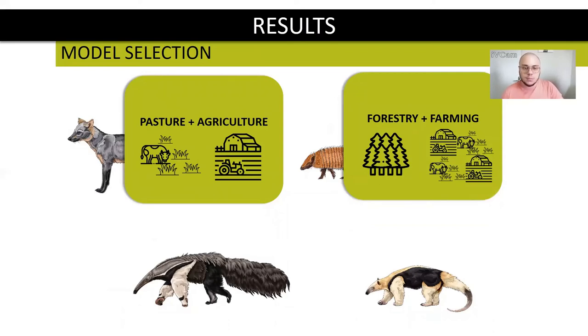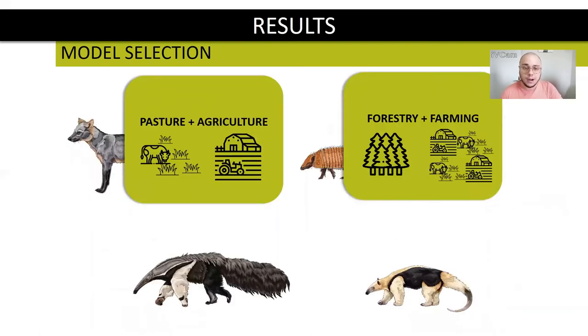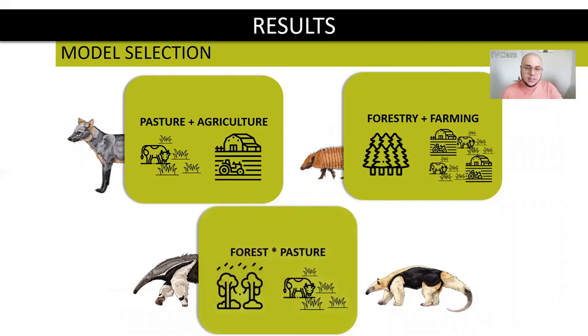Forestry, that is the commercial plantation of pinus and eucalyptus, summed with farming, with forestry having a stronger effect than farming. For Myrmecophaga tridactyla, we have forests interacting with pasture. It is one matrix cover and one habitat cover, regulating the effect of each other on the roadkill risk.